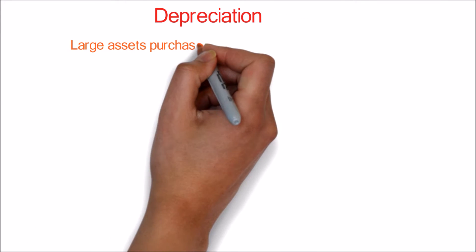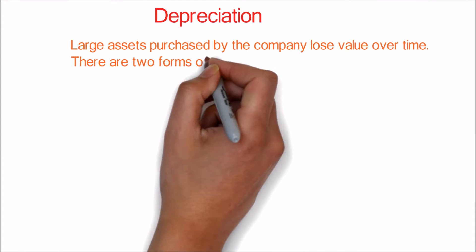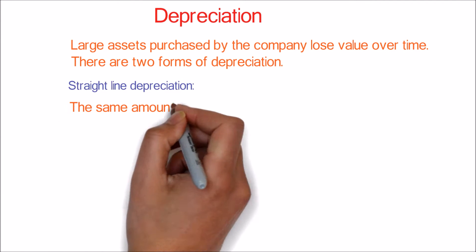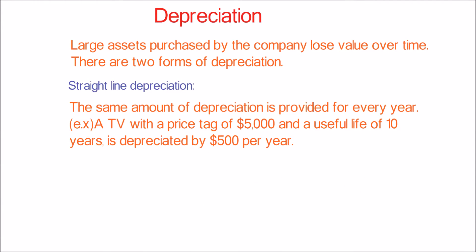Depreciation: large assets purchased by the company lose value over time. There are two forms of depreciation. Straight depreciation: the same amount of depreciation is applied every year. For example, a TV with a price tag of $5,000 and a useful life of 10 years is depreciated by $500 per year.